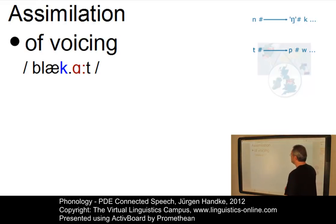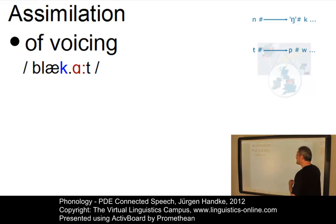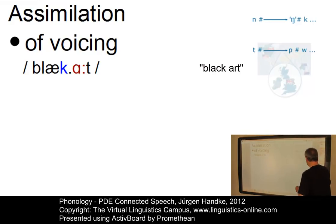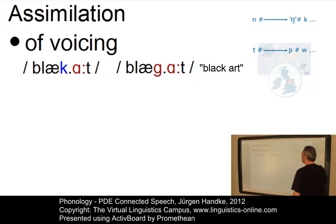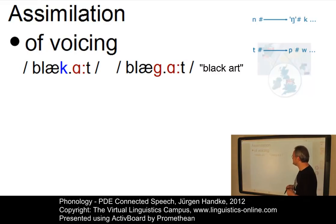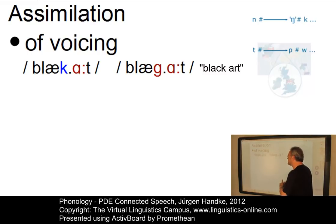Let us start with the assimilation of voicing. Here in the phrase 'black art', you might observe the following: the final voiceless velar plosive of 'black' becomes voiced under the influence of the subsequent vowel 'art'. And the result will be 'black art'.